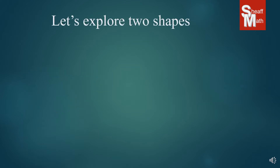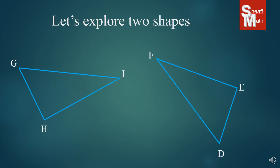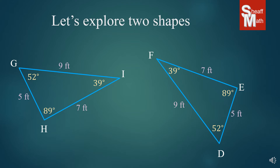Now let's explore a couple of shapes. Here we have two triangles and one looks like it got rotated around, and from just looking at it, it looks like they're pretty close to each other. But let's say that we were given this information right here. Would we be able to determine for sure if they were congruent? Well, if you look at the angles inside: 52, 39, and 89, we have 52, 89, and 39. That's a good start. Looking at the sides: 5, 9, and 7. So we have three matches and three matches, and so these are congruent.